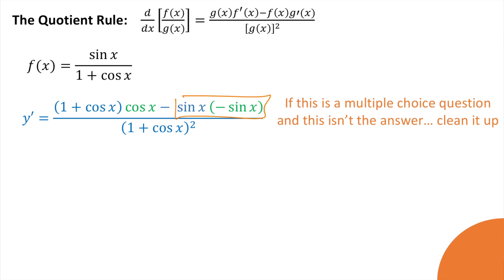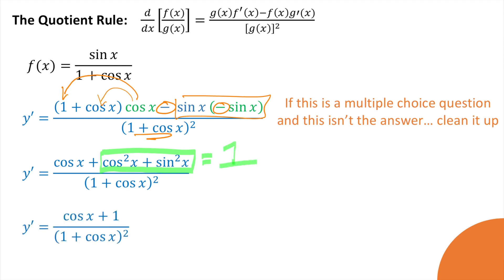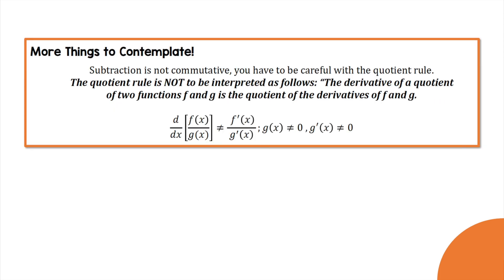Look at what we found: cosine squared plus sine squared — that equals 1, from your trig identities. Then we have cosine x plus 1 over 1 plus cosine x squared. We can cancel one factor from the top and bottom. Similar to the product rule, if you're taking the derivative of one function divided by another, you cannot simply do derivative of top over derivative of bottom. Please be careful about that.